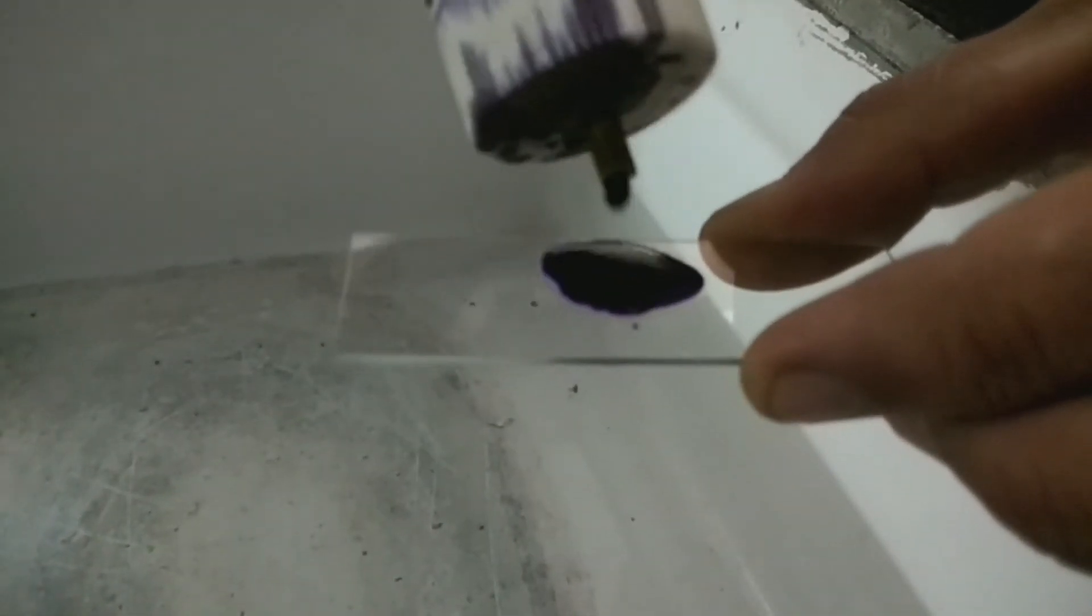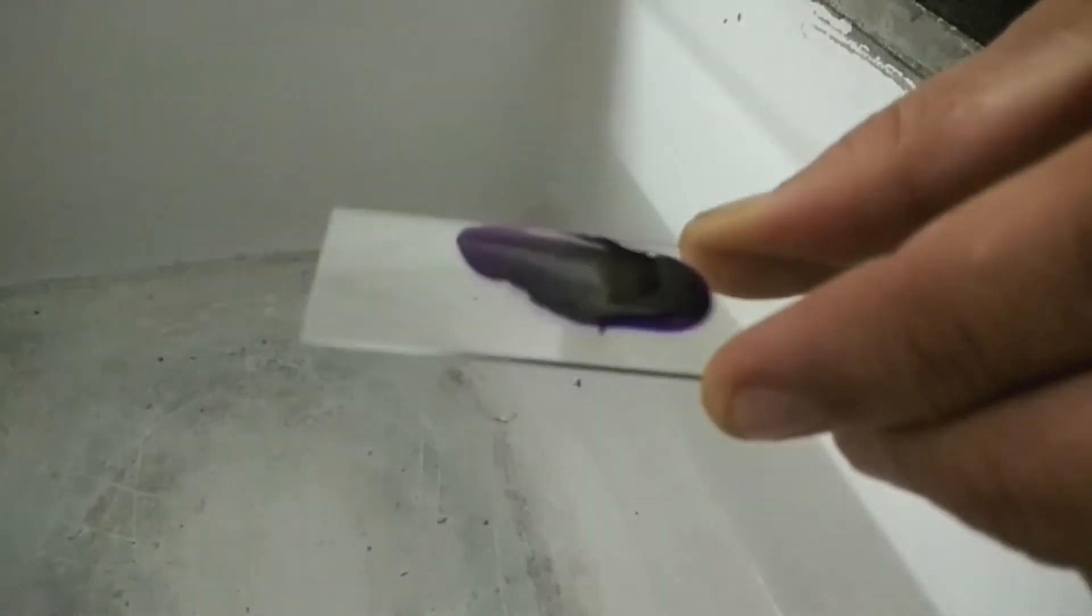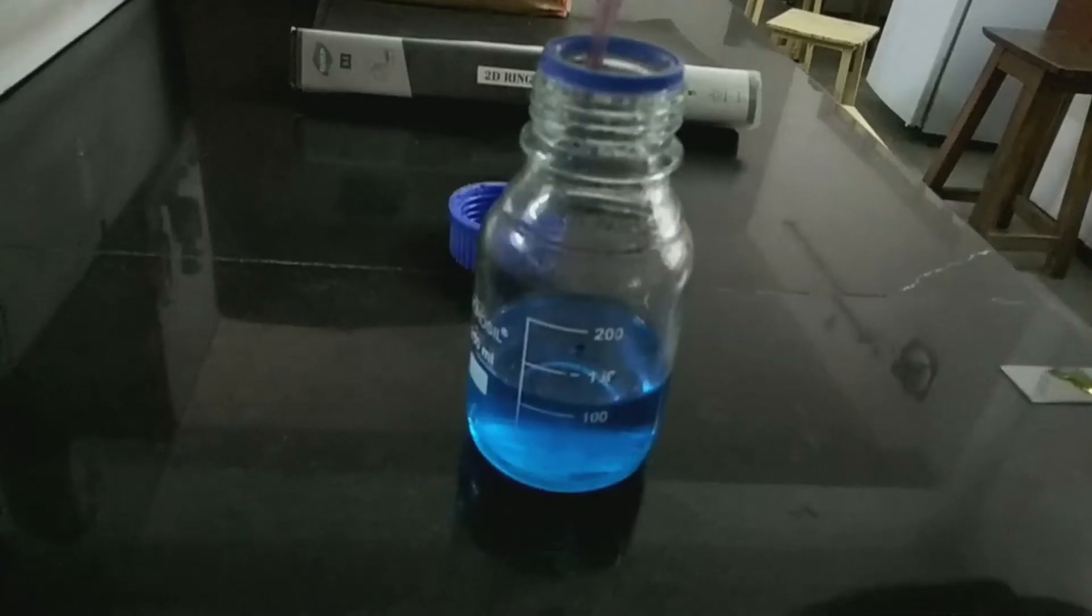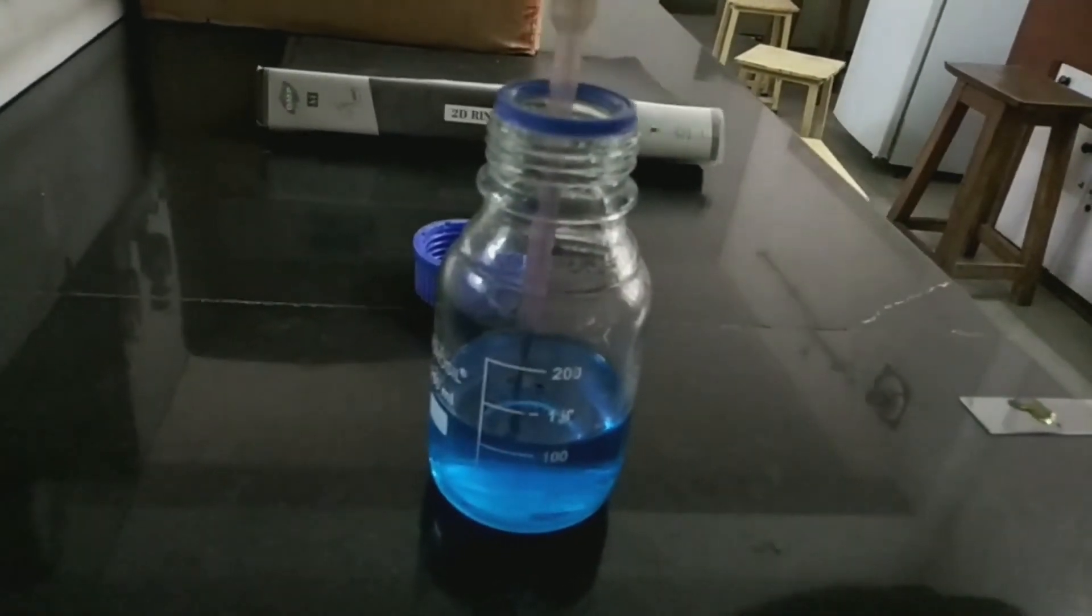Now you just have to stain the smear with the crystal violet for one to two minutes and wait. After that, you just have to decolorize the smear with the 20% copper sulfate.